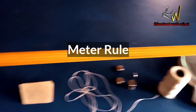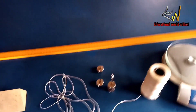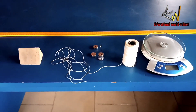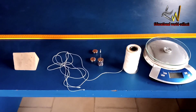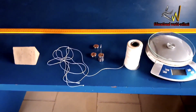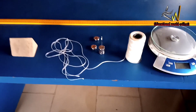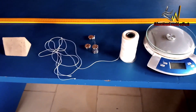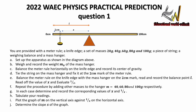We also have a meter rule. Now WAEC has gotten a little bit smarter, making it more difficult to predict this practical. But let's move on to my prediction for this year's Physics WAEC 2022 question number one practical on mechanics. You are provided with a meter rule, a knife edge, a set of masses — 20g, 40g, 60g, 80g, and 100g respectively — a piece of string, and a weighing balance.